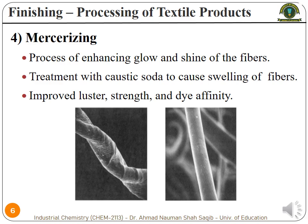After the bleaching process, next is the process of mercerizing. The mercerizing process is actually carried out to give some glow or shine to the fabric. In this process, the fabric is mostly treated with caustic soda solution, which results in the swelling of the fiber. This mercerizing process results in improved luster, glow, or shine of the fiber. It also gives better strength to the fiber.